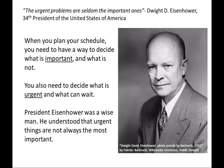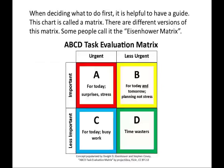When you plan your schedule, you need to have a way to decide what is important and what is not. You also need to decide what is urgent and what can wait. President Eisenhower was a wise man. He understood that urgent things are not always the most important. When deciding what to do first, it is helpful to have a guide. This chart is called a matrix. There are different versions of this matrix. Some people call it the Eisenhower matrix.